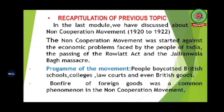Let us recapitulate the previous topic. In the last module, we discussed the Non-Cooperation Movement of 1920 which lasted till 1922. It was started against the economic problems faced by Indians due to British policies, the passing of the Rowlatt Act, and the Jallianwala Bagh massacre. The program of the movement involved boycotting of schools, colleges, law courts and British goods — bonfires of foreign goods were a common phenomenon.